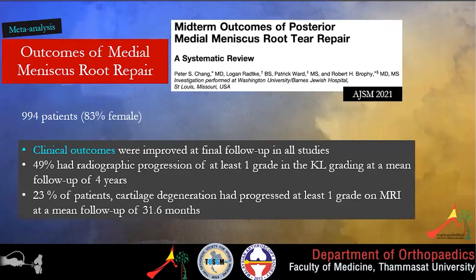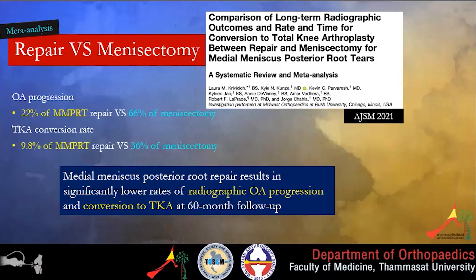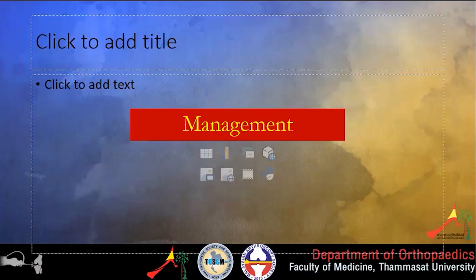Regarding repair outcomes, a recent meta-analysis from AJSM 2021 showed mid-term outcomes of posterior medial meniscus root tear repair in a review of 994 patients — most of them female — and clinical outcomes improved in all studies. Another paper compared medial and lateral meniscus root repair and found that lateral meniscus root repair has better functional outcomes. A recent meta-analysis also showed that meniscus posterior root repair results in significantly lower rates of osteoarthritis progression and conversion to total knee replacement compared to the meniscectomy group.